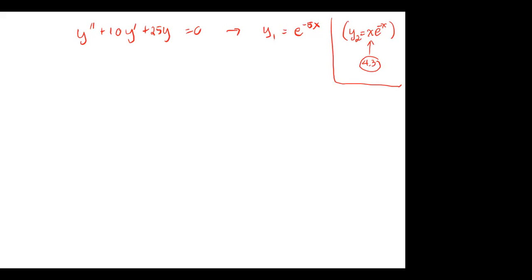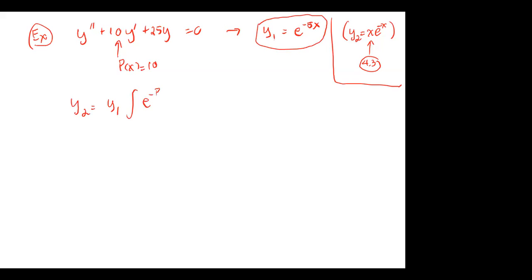For this equation, it is already in standard form, and p(x) equals 10. The first solution y1 is e to the negative 5x. Applying the formula: y2 equals y1 times the integral of e to the negative integral of p(x) dx, divided by y1 squared. So y1 is e to the negative 5x, the integral has e to the negative integral of 10 dx in the numerator, divided by y1 squared which is e to the negative 5x squared, giving e to the negative 10x in the denominator.